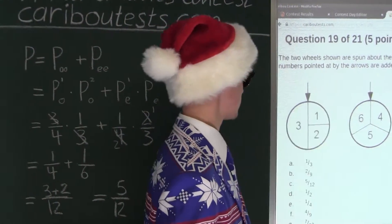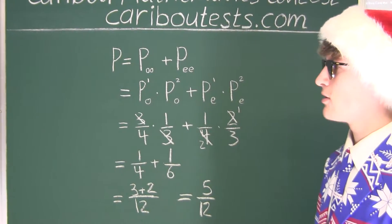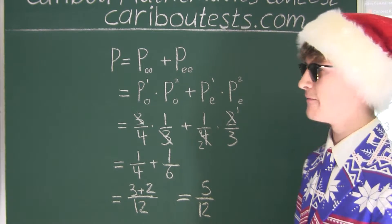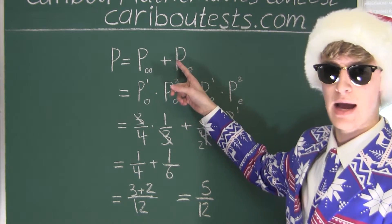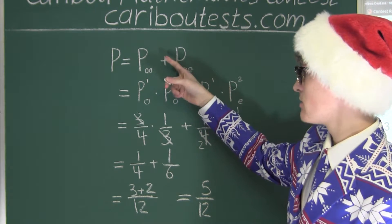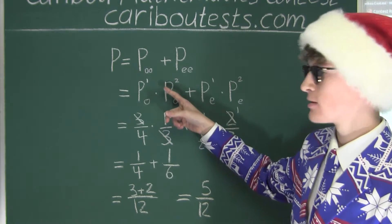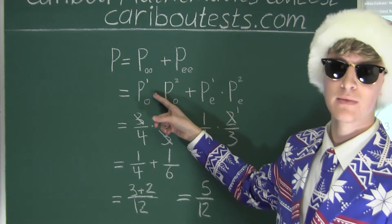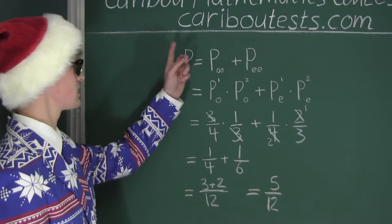So the probability that the sum is even is option C: five over twelve. The key to solving this problem is to know that when dealing with two independent events, the probability of one event or another event happening translates to a plus sign. And when we are dealing with one event and another independent event both happening, that translates into multiplication. If you'd like to know more about this contest, please feel free to visit our website at cariboutests.com.